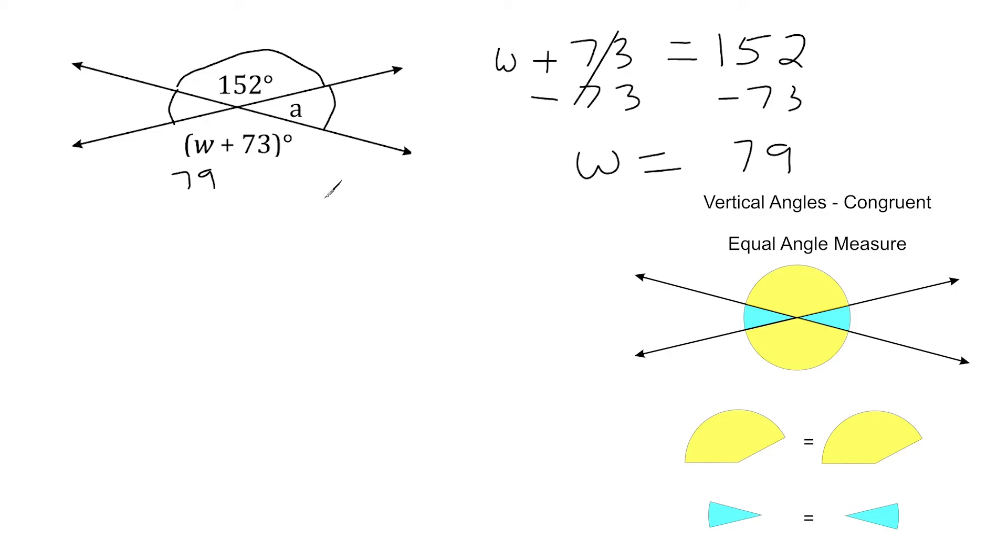All right, now what we're going to do next is we're going to figure out what the value of A is. Now, we can clearly see that A is an acute angle, so that means it's going to be less than 90 degrees. And to me, it kind of looks like it's around like a 30 degree angle or something like that, but we want to get the precise measurement. Now, we should be able to see that this angle here, 152, and angle A are supplementary angles, because if you put them right next to each other, we can see that it forms a straight angle.